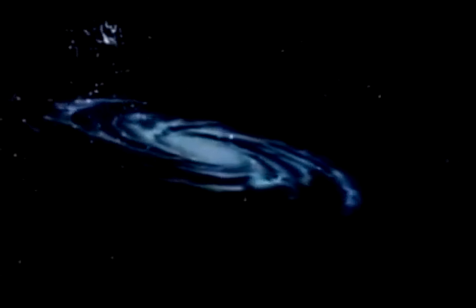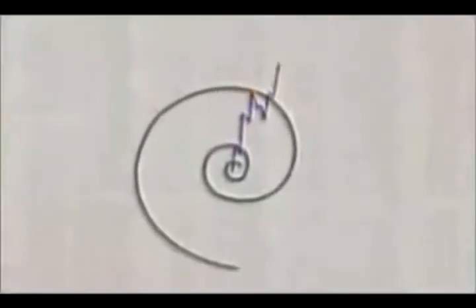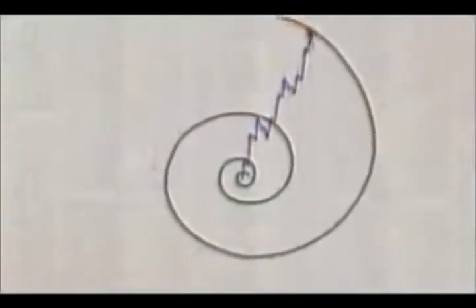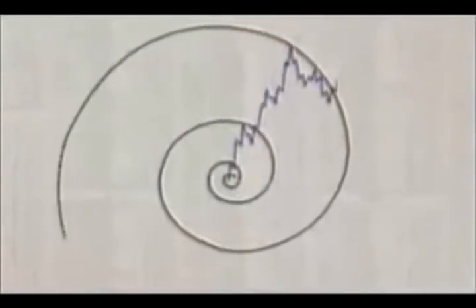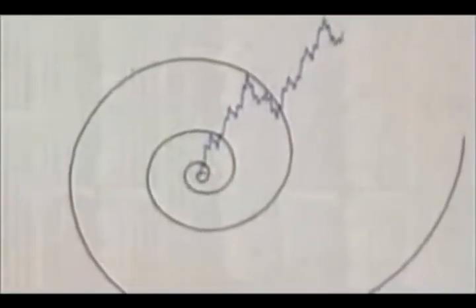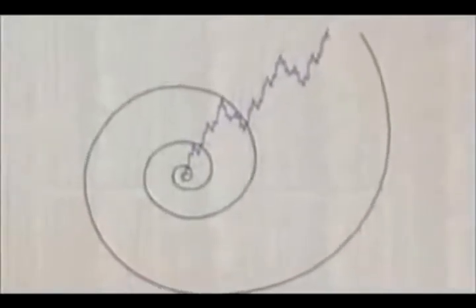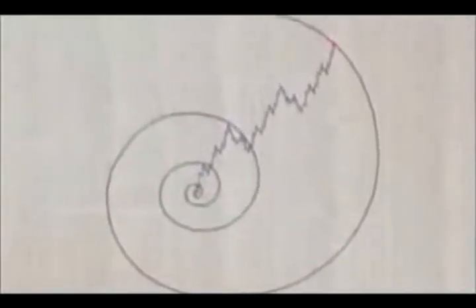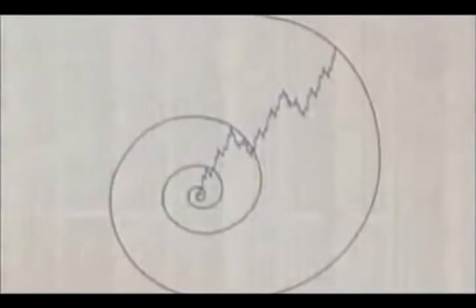So how do these spirals connect to socionomics? The idealized depiction of the stock market's progress can be seen as a spiral. The top of each successive wave of one higher degree serves as a touchpoint for the exponential expansion, and pretty soon it begins to look like the pattern of a hurricane or galaxy.